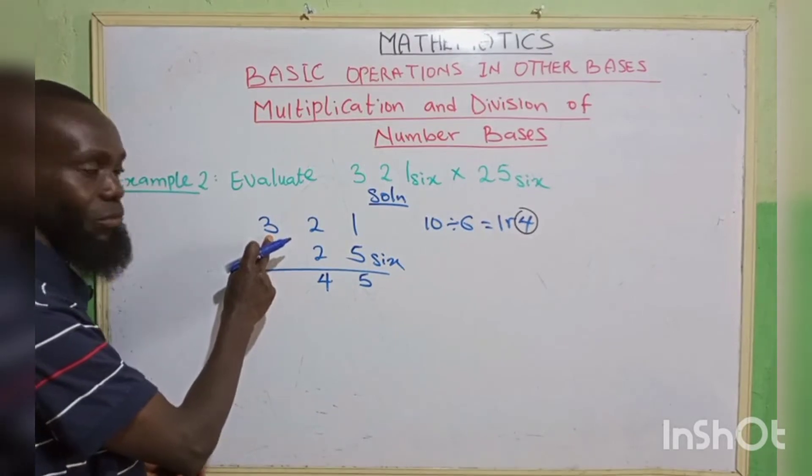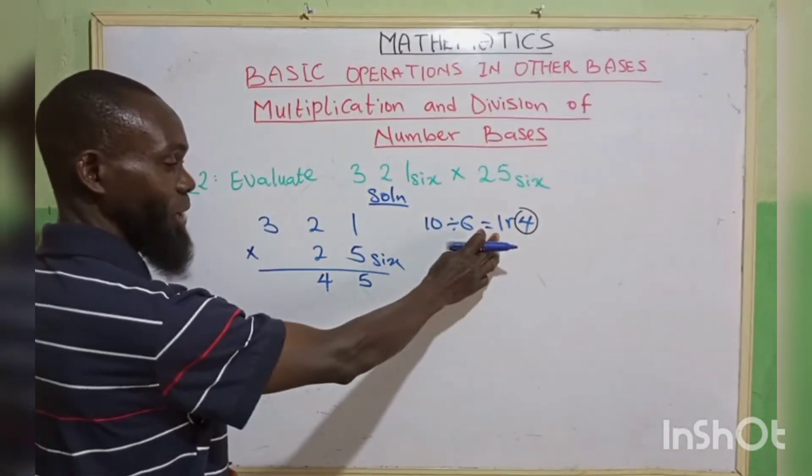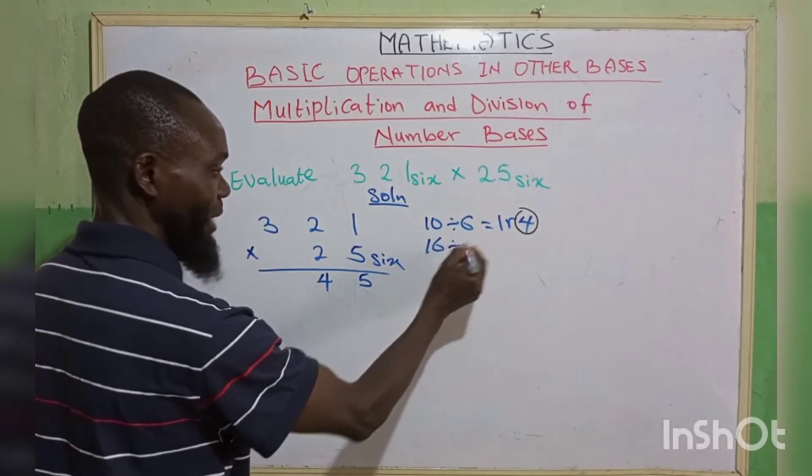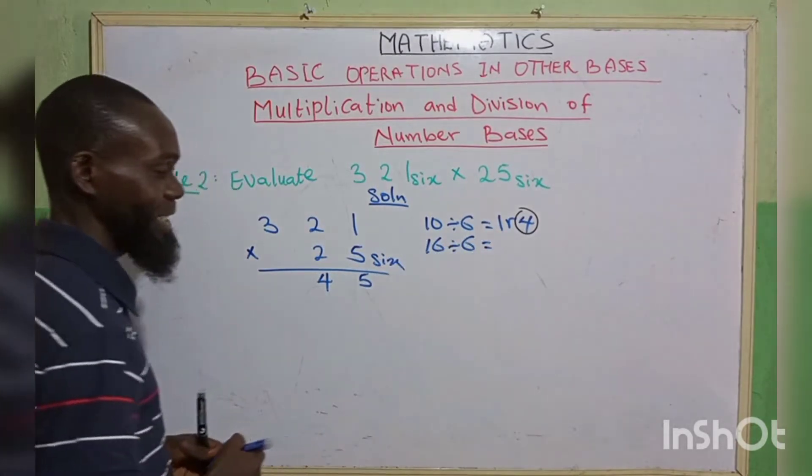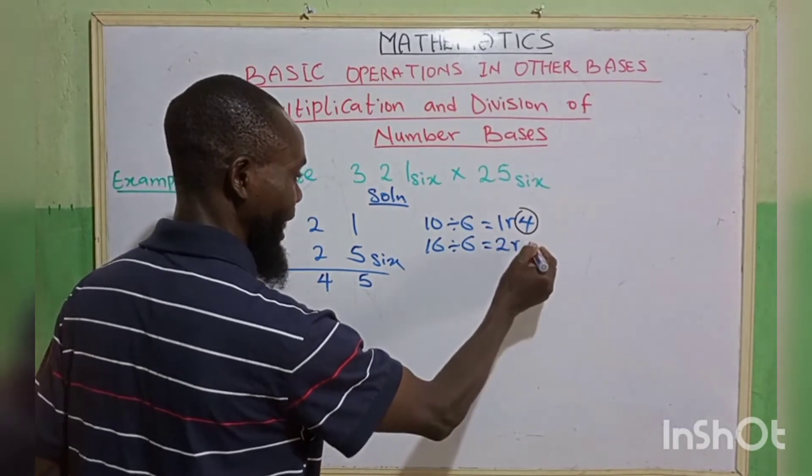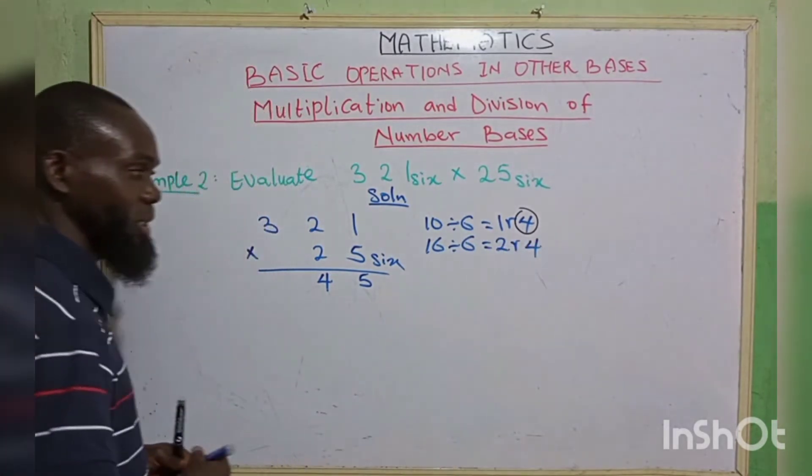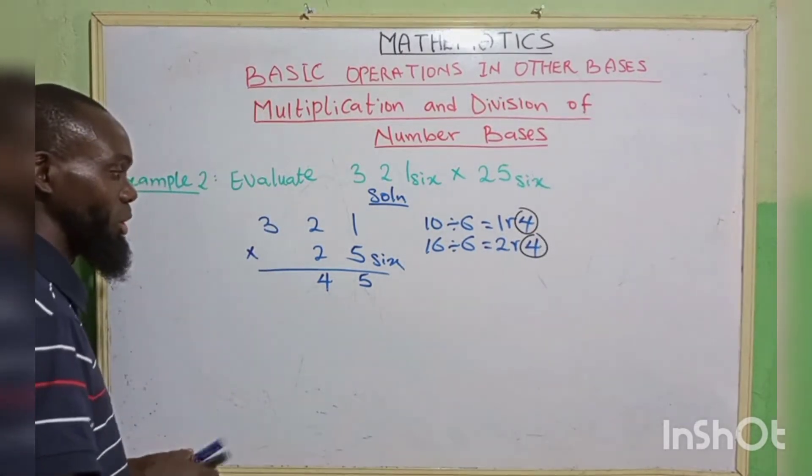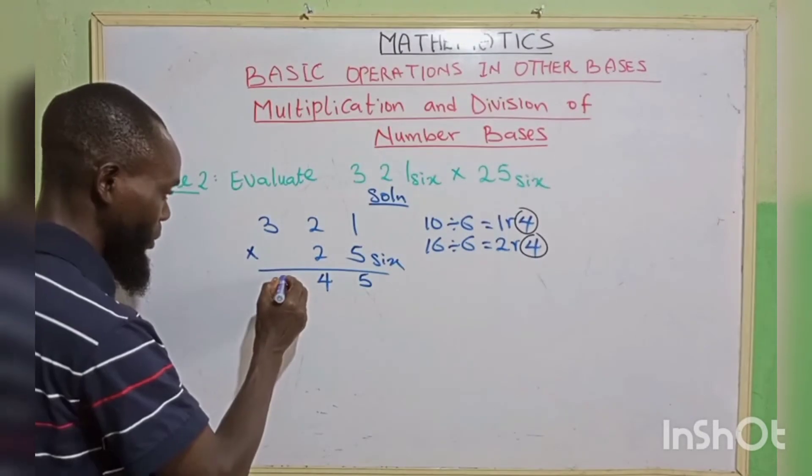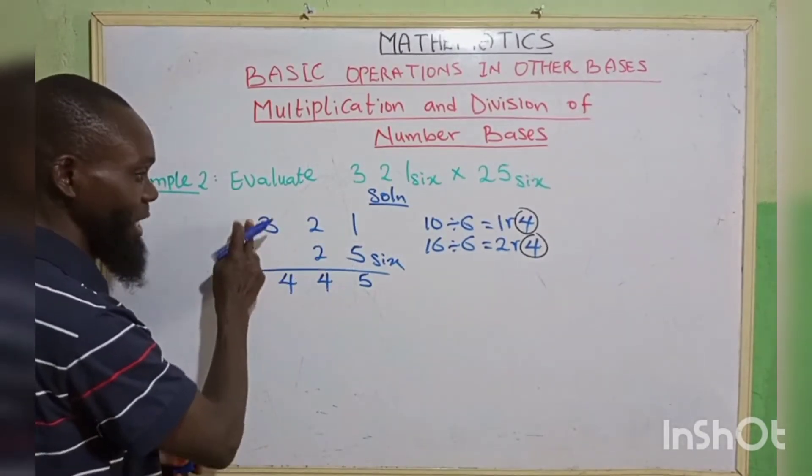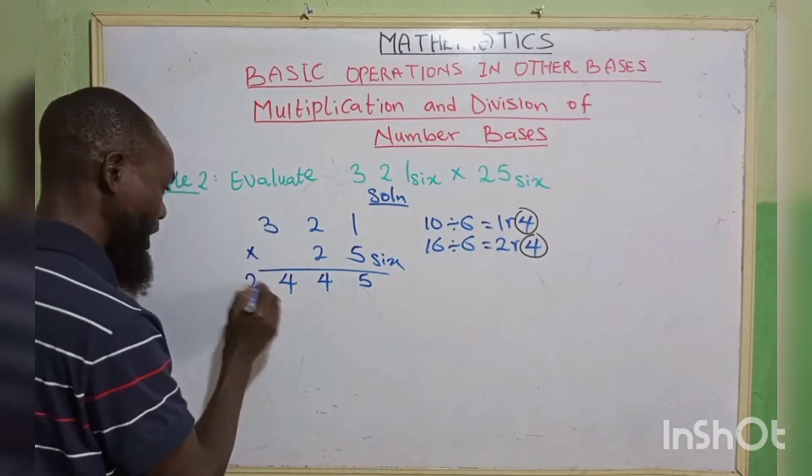5 times 3, that is 15. 15 plus 1 you've carried, that is 16. It's above 6. 16 divided by 6, that is going to give us 2 remainder 4. We write our remainder 4, then we carry 2. There's no more number here, so you put your 2 here in the front.